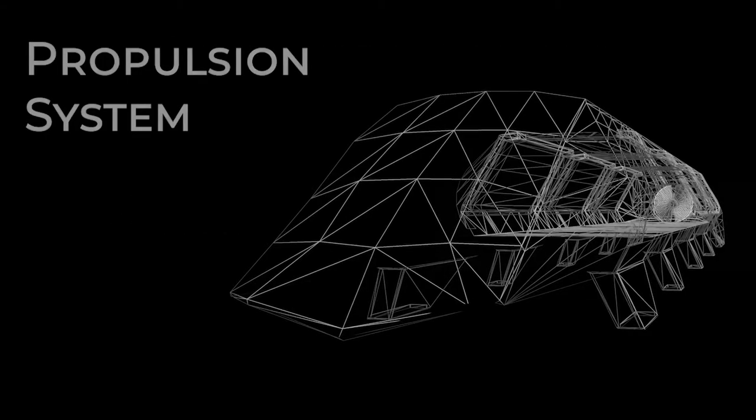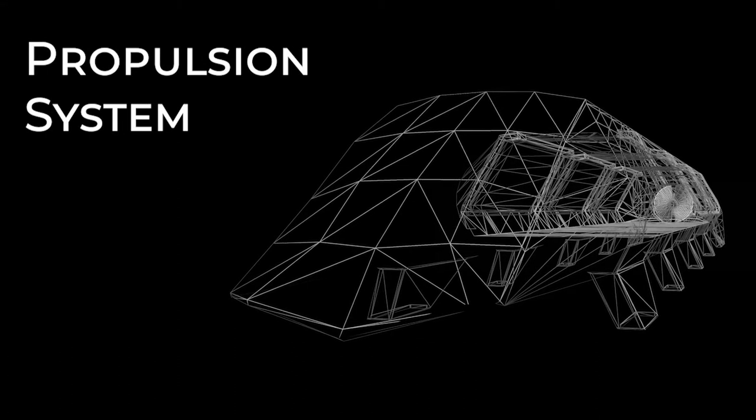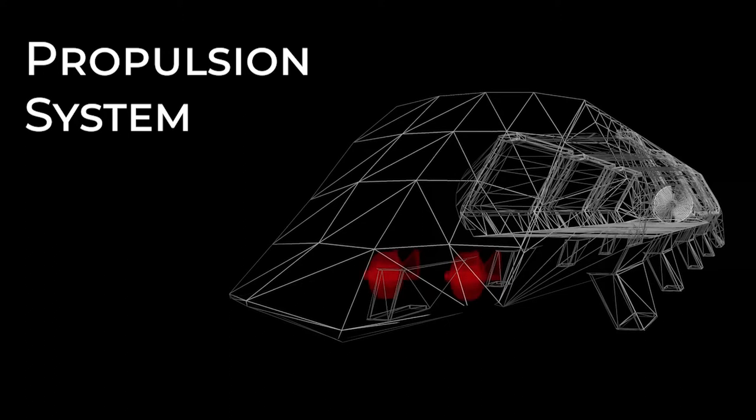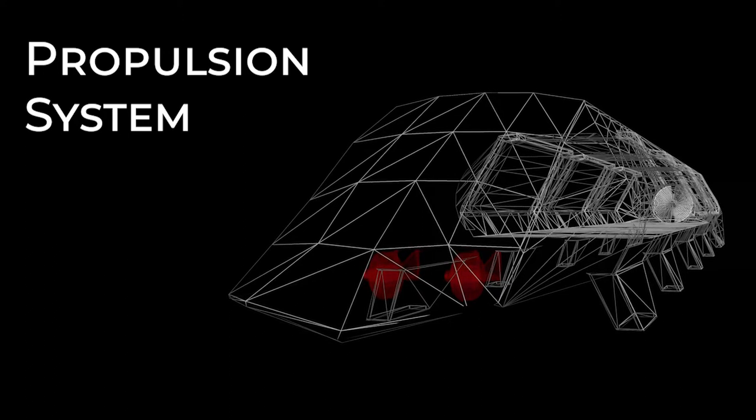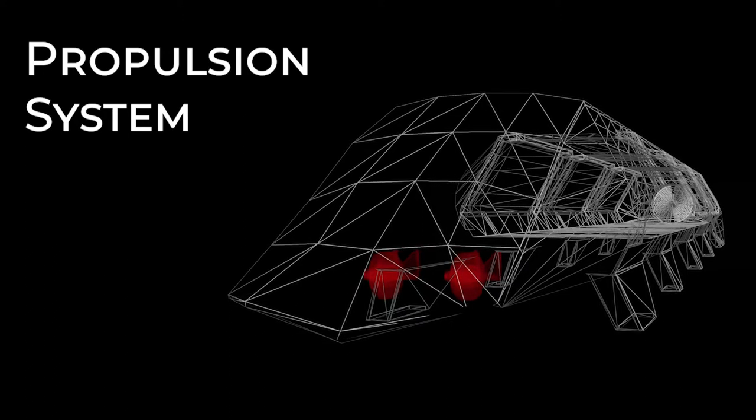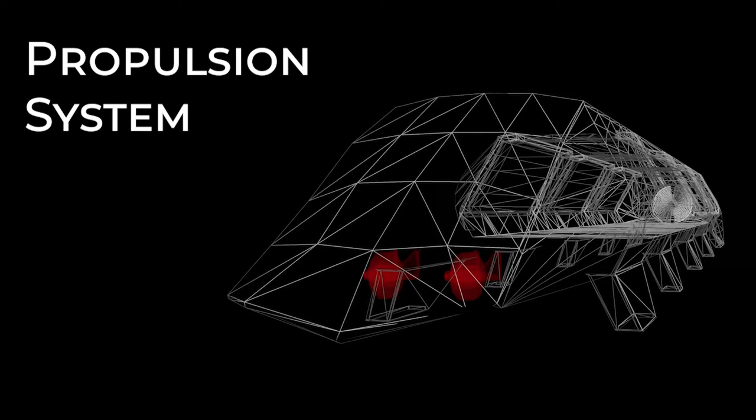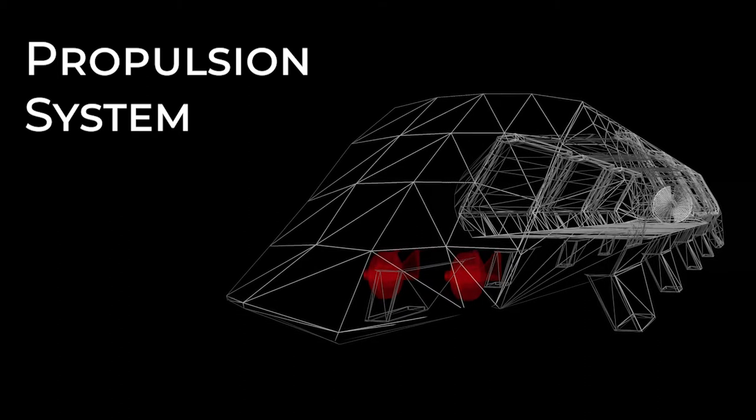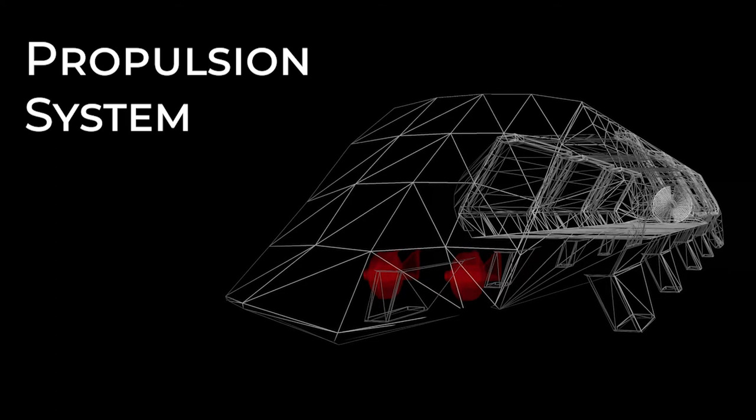The propulsion system of a Hyperloop pod is responsible for accelerating the pod through the tube. There are multiple propulsion methods that can achieve this, from high-powered electric motors to cold gas thrusters, or even experimental systems like Halbach arrays. In general, any of these methods could work, but ultimately it is essential that the propulsion system be fast, energy-efficient, and safe.